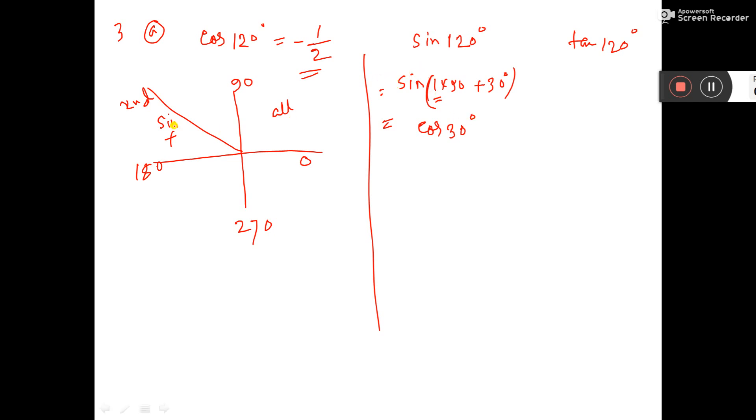So second quadrant, sin is positive, our sum also sin. So plus will come. And what is the value of cos 30? That is root 3 by 2. This is the answer.